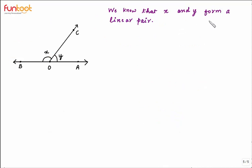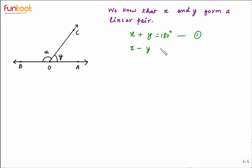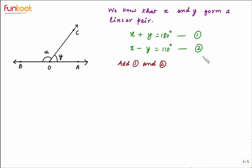We know that X and Y form a linear pair, so X plus Y is equal to 180 degrees — call this equation 1. Also, given in the question, X minus Y is equal to 110 degrees — call this equation 2. So let's see how we can solve equations 1 and 2.